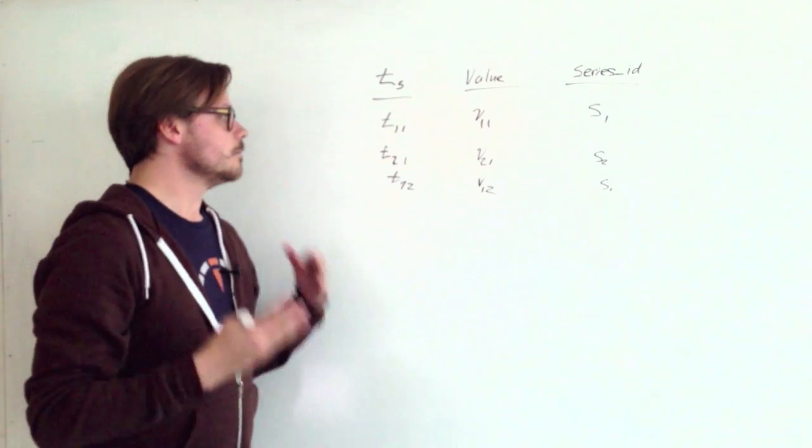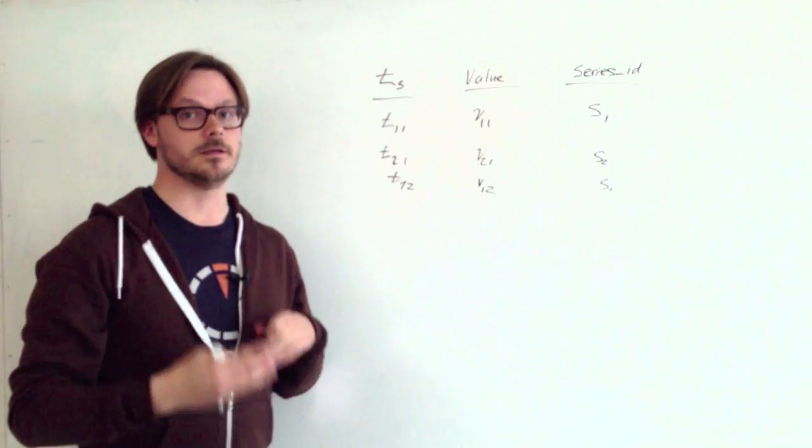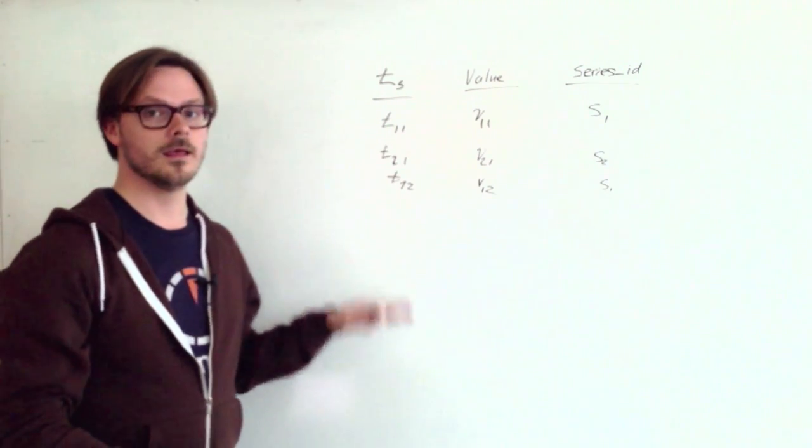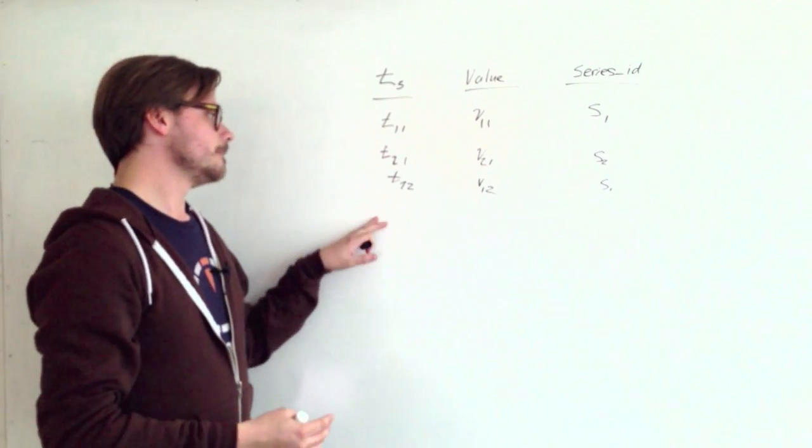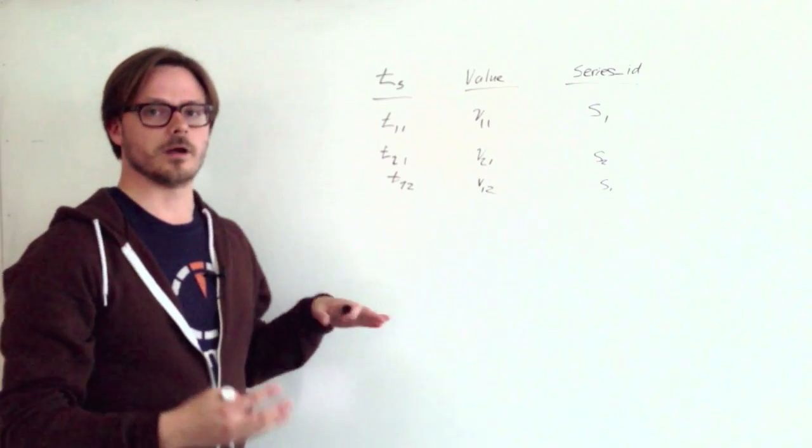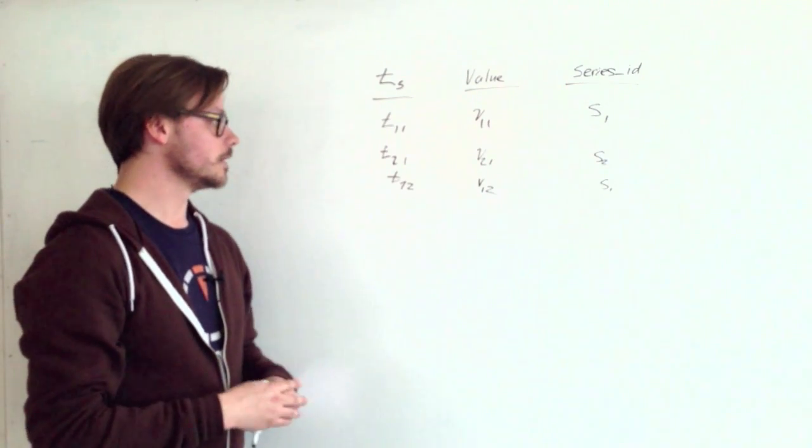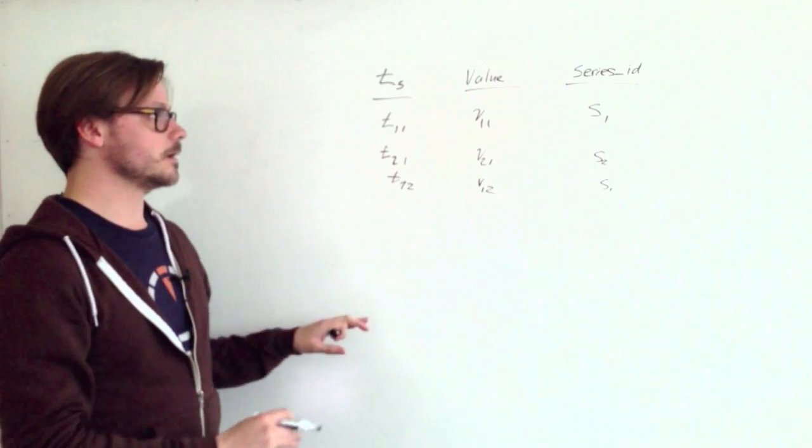But it has some problems. Usually with time series data, you want to query it order by time. And in order to do that in a relational database, you need an index on the time column. That's great when the data set's small. As it grows and you get above 100 million rows, the index can grow to the point where it won't fit into memory. And once that happens, the queries get a lot slower.